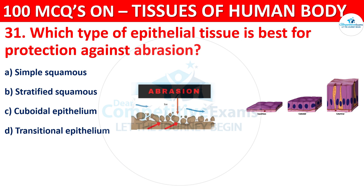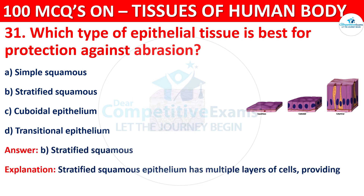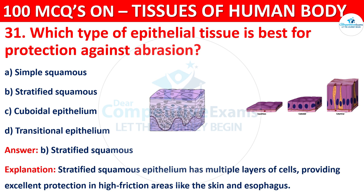The correct answer is B, that is Stratified Squamous. Stratified squamous epithelium has multiple layers of cells, providing excellent protection in high-friction areas like skin and esophagus.